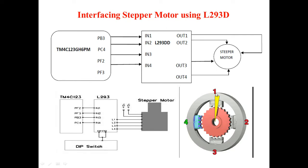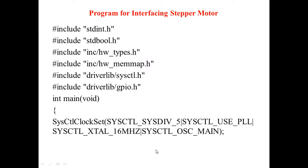To rotate the stepper motor, we turn on the appropriate pins. PF2 is pin 1 and PF3 is pin 2. Setting PF2=1 and PF3=1 creates a voltage difference between lines 1 and 2, causing current to flow and the motor to take step 1. Then setting pin 1 low, pin 2 and pin 3 high gives rotation between 2 and 3. Setting pin 2 low, pin 3 and pin 4 high gives rotation between 3 and 4. Then setting pin 3 low and connecting pin 4 and pin 1 completes the cycle.